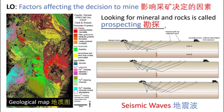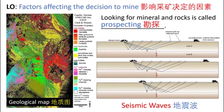Another prospecting method is the use of seismic waves. As shown in the diagram, seismic waves are vibrations sent down into the earth's crust, which are then reflected by different layers or minerals within the crust and picked up by sensors on the earth's surface. Geophysicists use this data to try and locate deposits of rocks or minerals which are underneath the ground.